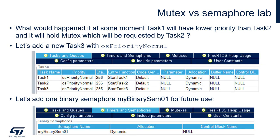In our next example, we will test the mutex's biggest advantage — priority inheritance — and compare it to a binary semaphore. We will simulate the following situation: we will add task 3, which sends some data over SWO but does not fight for the mutex. Within task 1, inside the area where the task holds the mutex, we will decrease its priority after the third iteration, so the scheduler should switch context from task 1 to task 2 or task 3, which have higher priority. Despite this, task 2 will manage to acquire the mutex, as the scheduler will temporarily raise the priority of task 1 to allow mutex release — this is the priority inheritance mechanism.